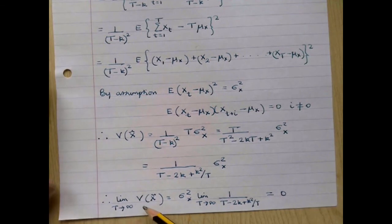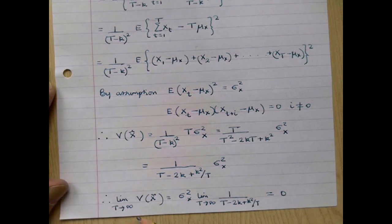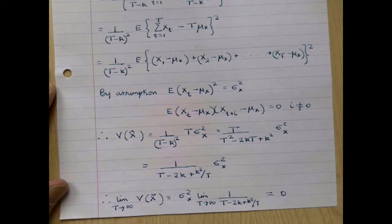So we've shown that this estimator satisfies the sufficient conditions for it to be consistent: it's asymptotically unbiased, and its variance goes to 0 as T goes to infinity. Therefore, this is an example of an estimator which is biased in small samples but asymptotically unbiased and consistent.